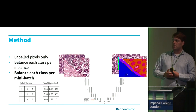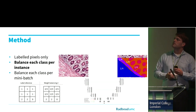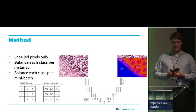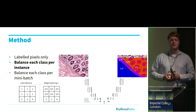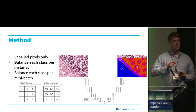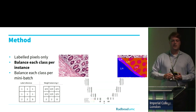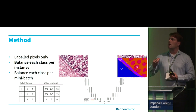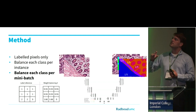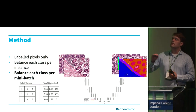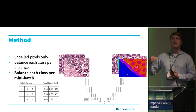The first balancing method is relatively simple, where the weight of each pixel is calculated based on the class occurrence per patch. The second balancing method also calculates the weight per pixel based on the class occurrence per patch, but with a different formulation.